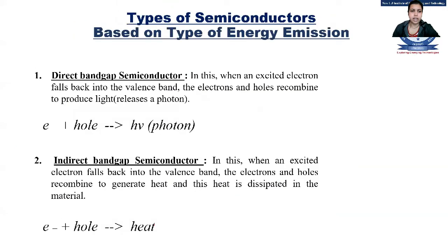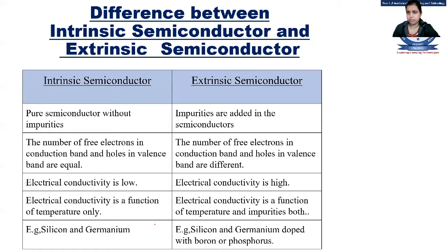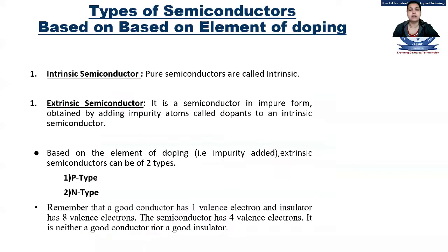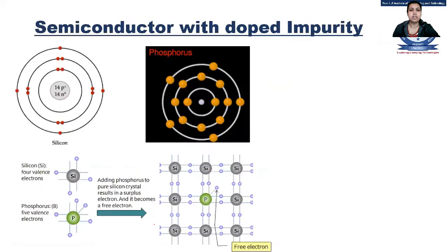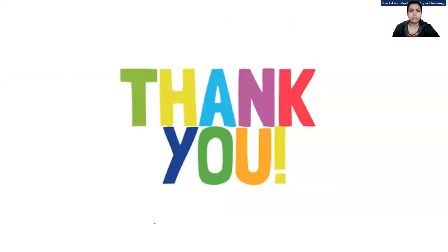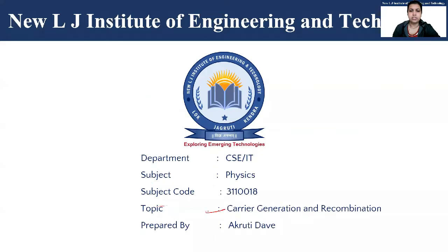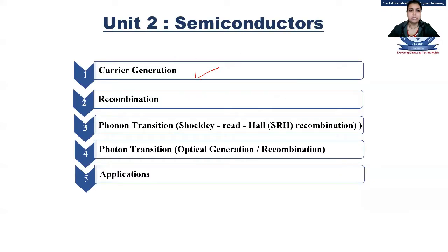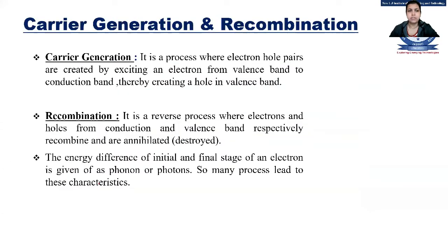We saw the basic difference between intrinsic and extrinsic, as well as p-type and n-type semiconductors. Moving ahead, the next concept is carrier generation and recombination. There is one more topic on equilibrium characteristics which will be covered at the end. We will cover carrier generation and recombination first to maintain continuity. We will go through two phenomena: phonon transition known as Shockley-Read-Hall recombination, and photon transition, which is optical generation or recombination.